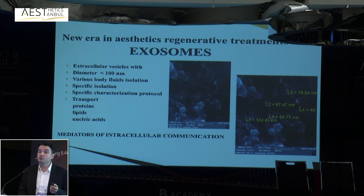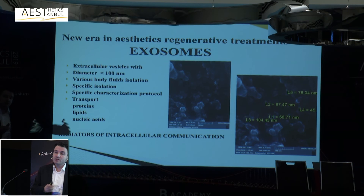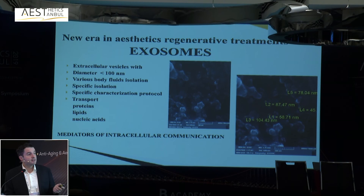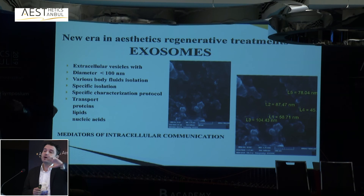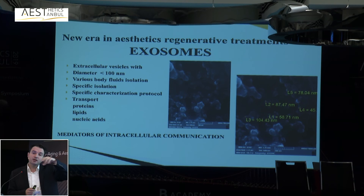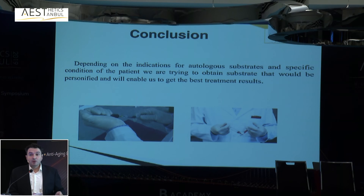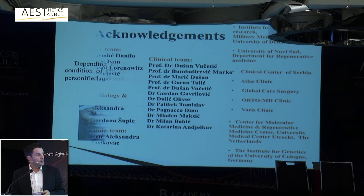Our future direction is subcellular therapy — working with the signals that stem cells produce, which act like hormones on tissue. We call these microvesicles. Within microvesicles you have exosomes, ribosomes, mitochondria, and protein fractions containing informative DNA and RNA. We are now working on surface characterization of exosomes with the goal of, within a few years, using these specific proteins from cells rather than the cells themselves.